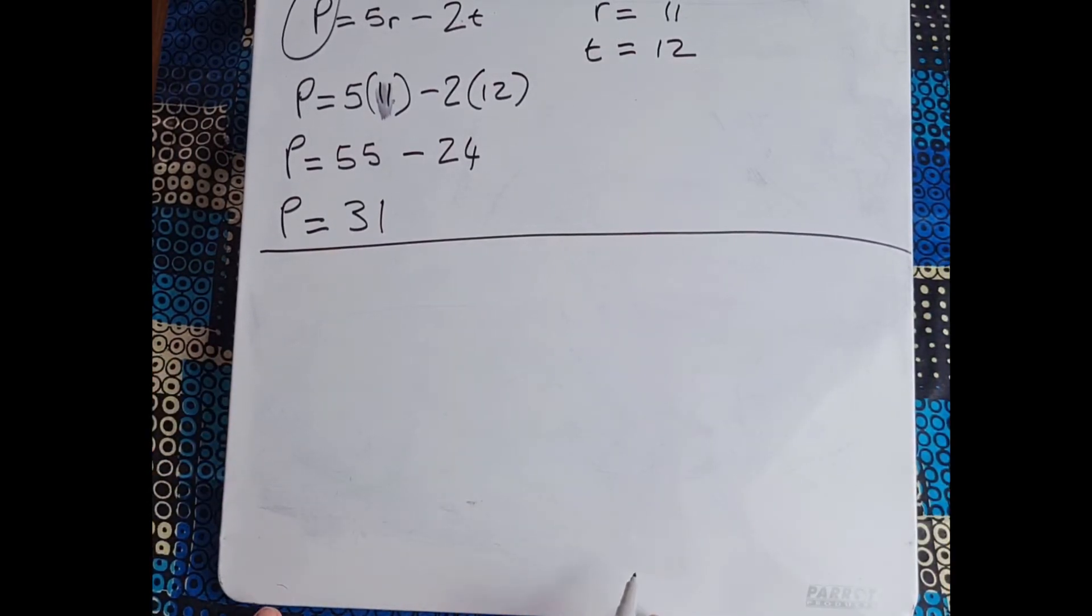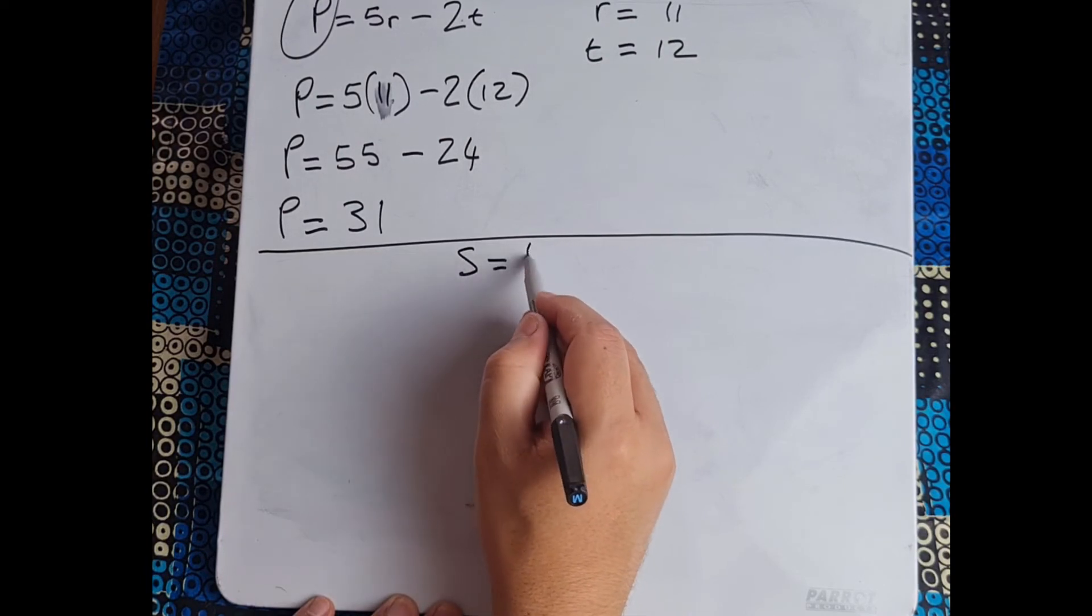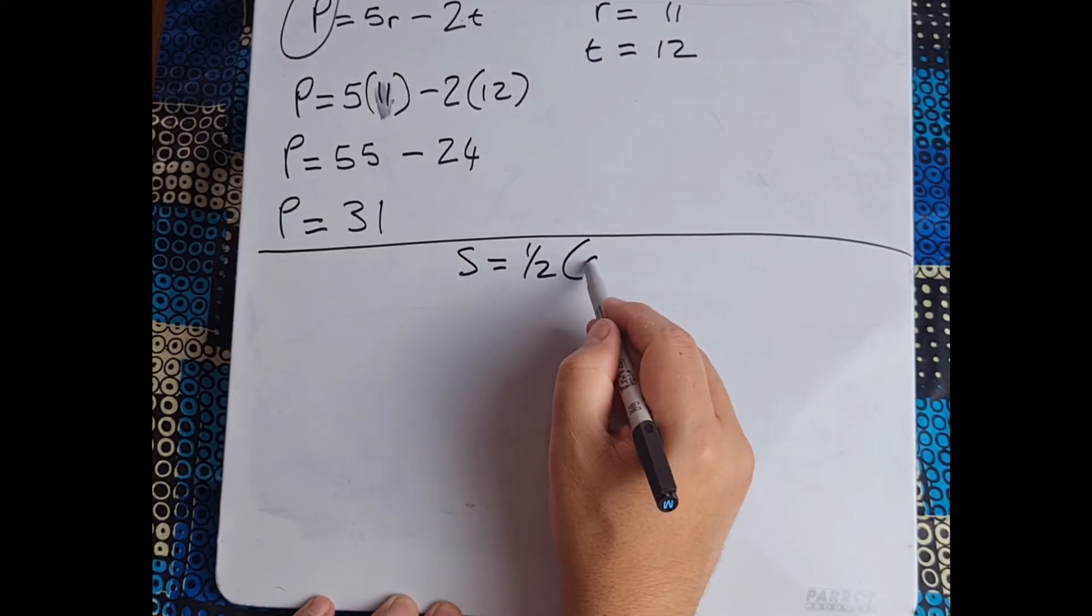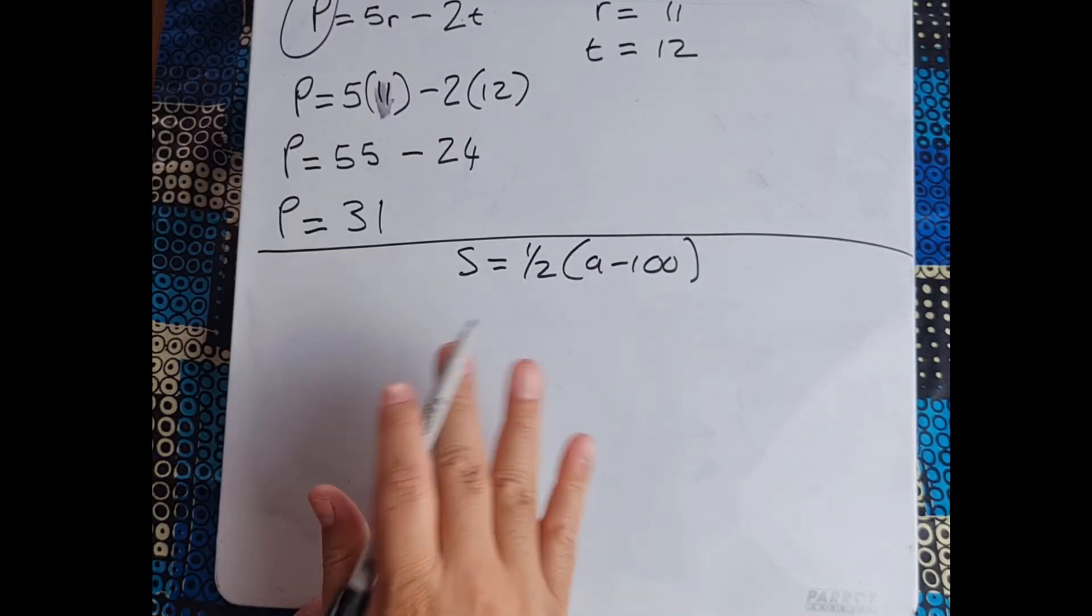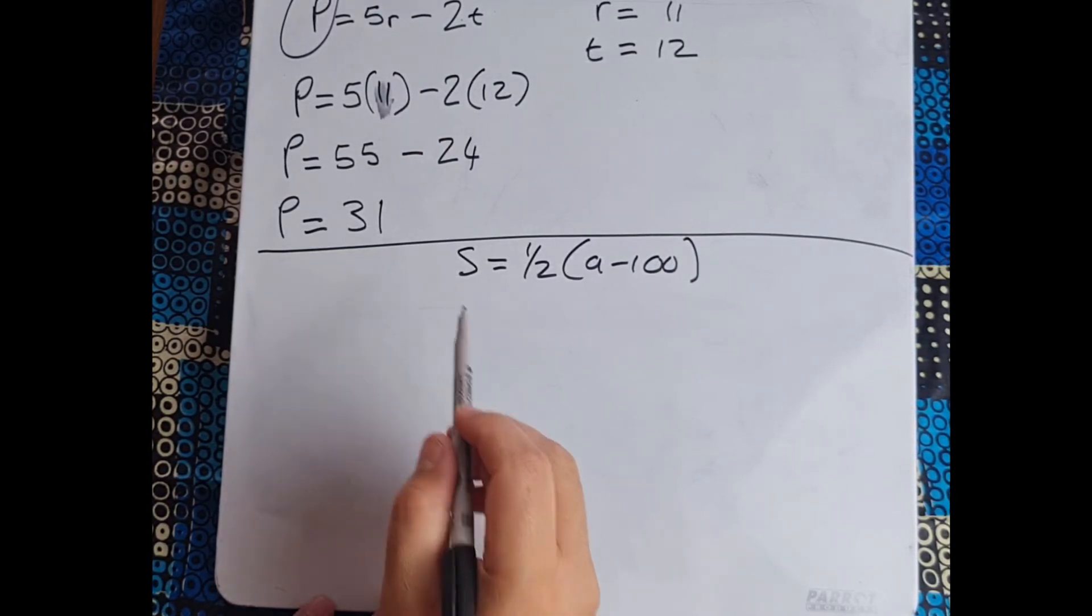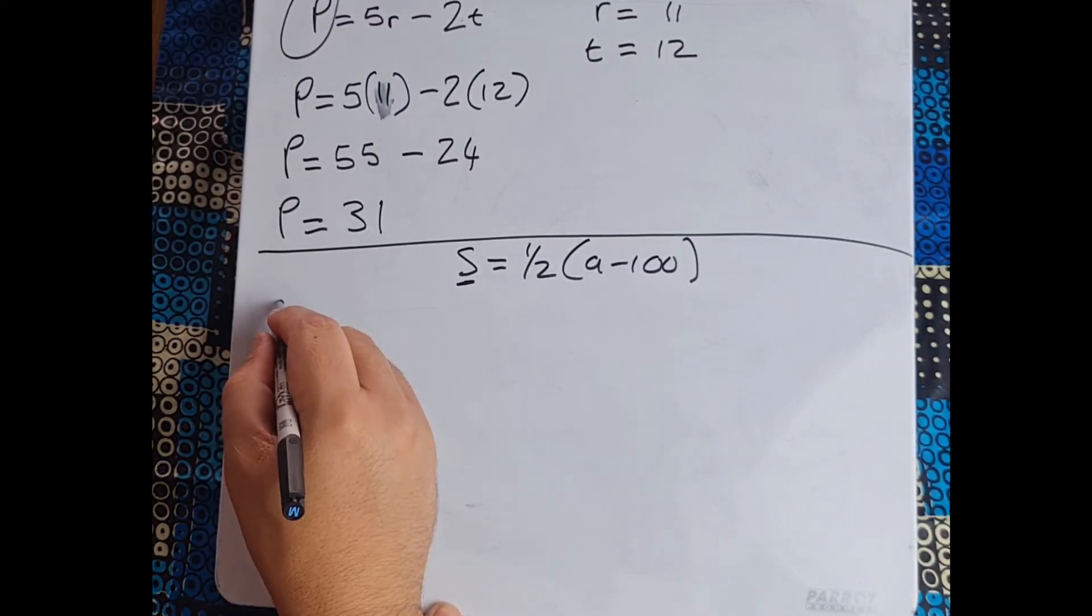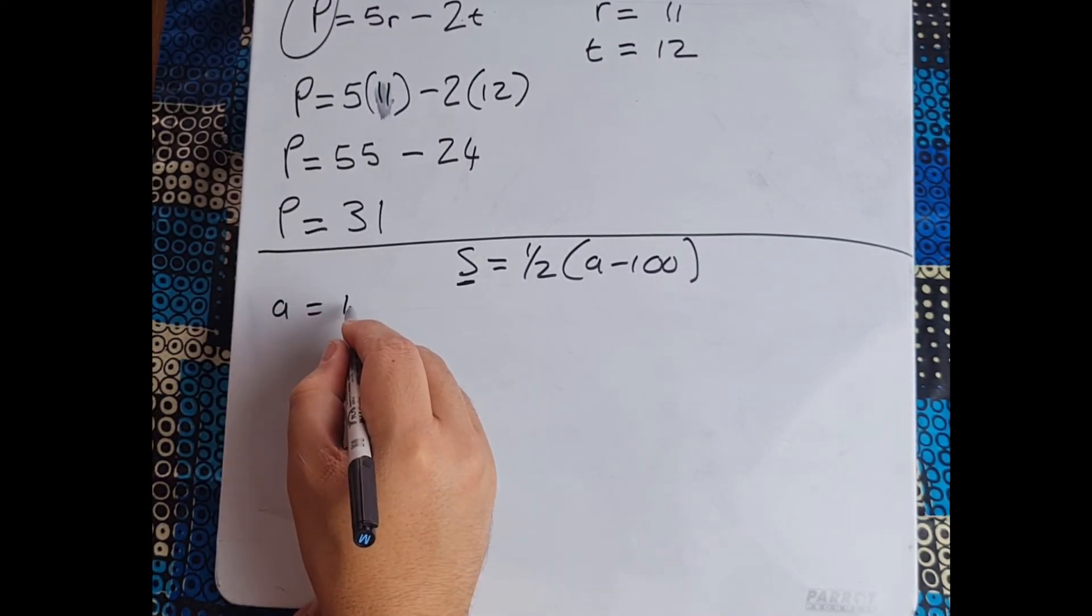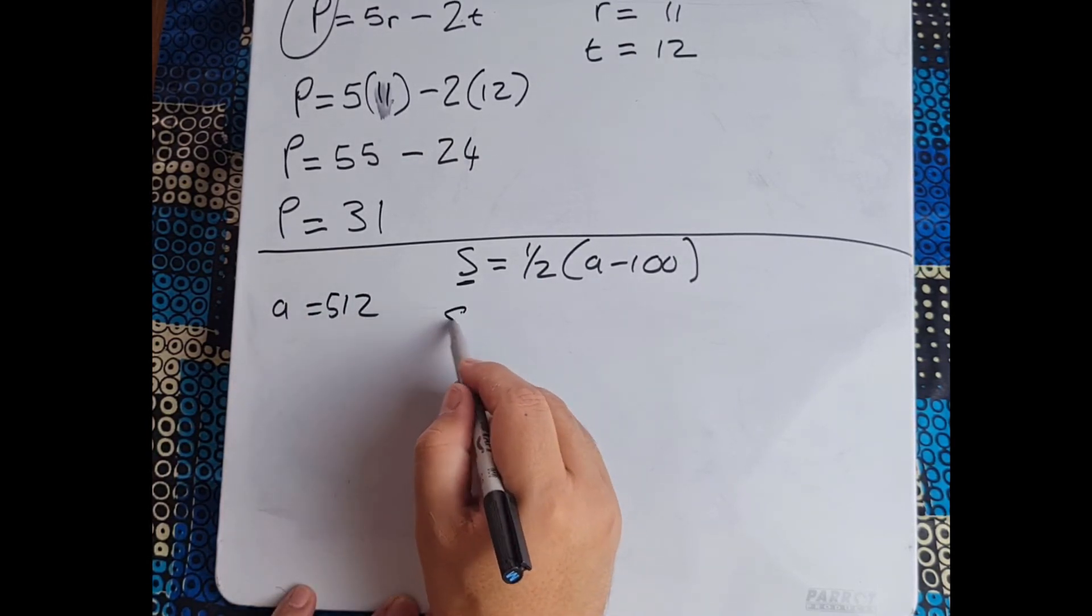Let's look at one more. Here's a nice one for us: s equals a half times a minus 100. That is our formula, that's what they want us to work out. They want us to calculate what s is and the only thing they give us is a, and they say a equals 512.